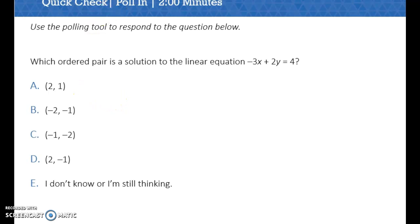First, it asks which ordered pair is a solution to the linear equation negative 3x plus 2y equals 4. So in order to figure this out, we need to actually plug in these values. Remember, every ordered pair is x comma y. So we're just going to plug these in and solve.